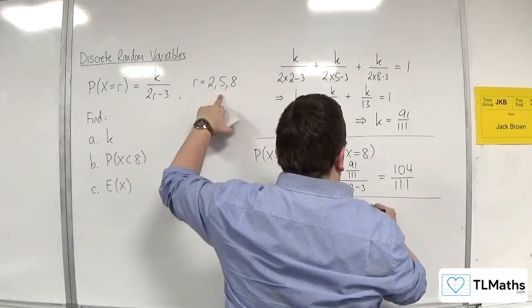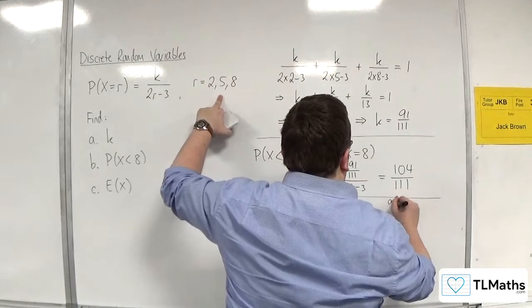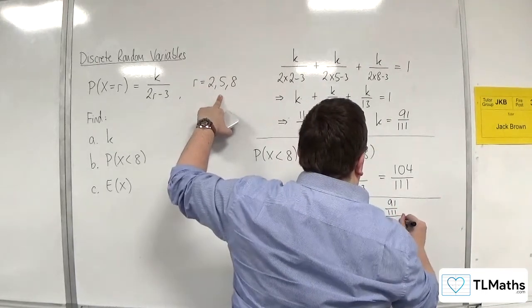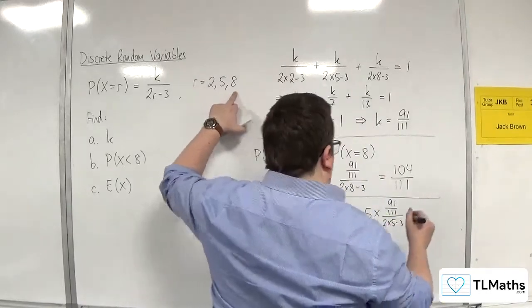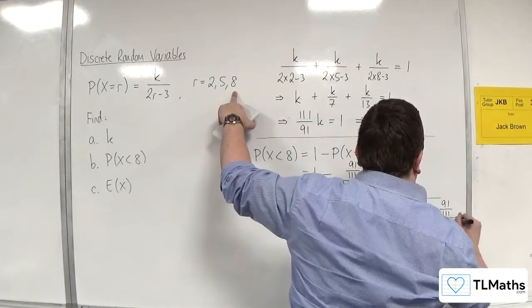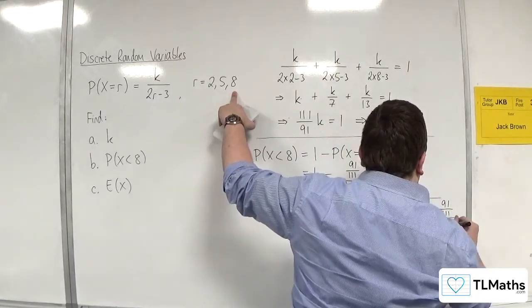plus 5 times 91 over 111, over 2 times 5 take away 3. Plus 8 times 91 over 111, times 2 times 8 take away 3.